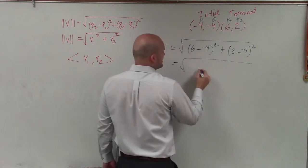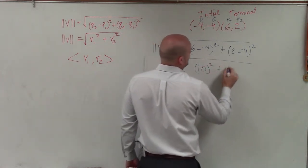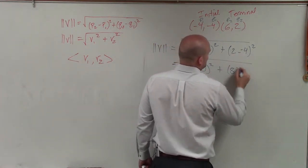I'm going to go ahead and simplify that. 6 minus negative 4 is 10 squared, plus 2 minus negative 4 is 8 squared.